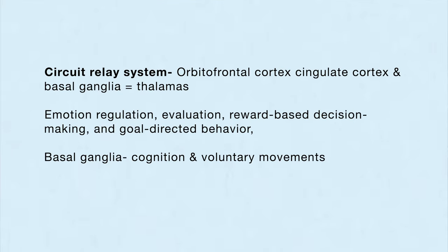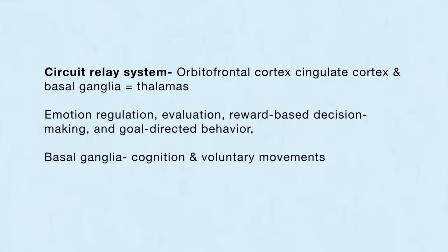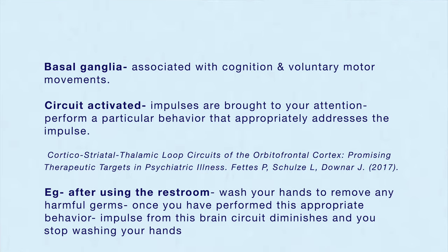Now I'm going to talk about its relation to brain circuits. One example is the circuit relay system, relating to different parts of the brain such as the orbitofrontal cortex, cingulate cortex and the caudate nucleus of the basal ganglia. These areas are related to complex behaviours such as emotional regulation, reward-based decision making and goal-directed behaviour. This relay system is also related to the thalamus. When this circuit is activated, the impulses that an individual has with OCD are brought to your attention and cause you to perform a particular behaviour that appropriately addresses the impulse.